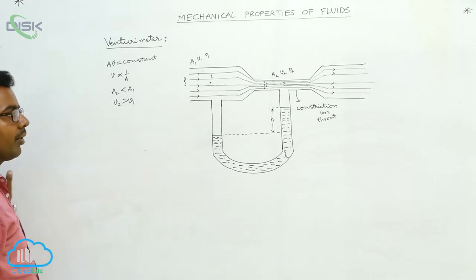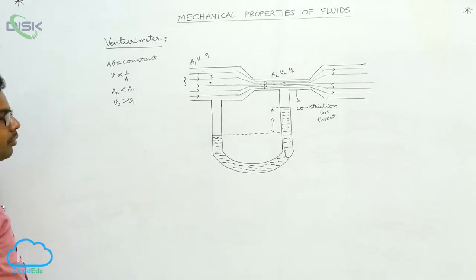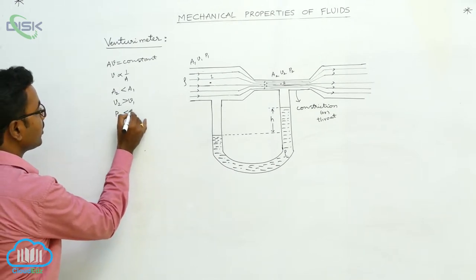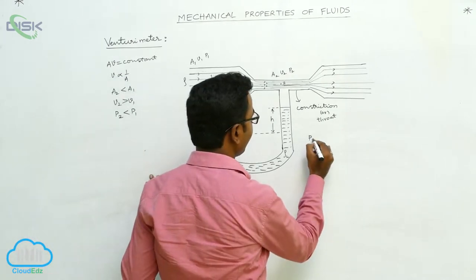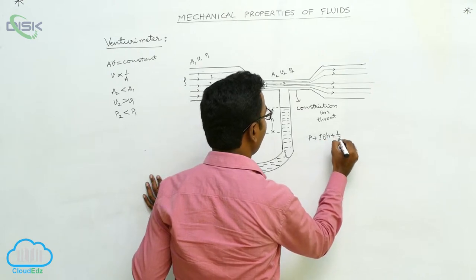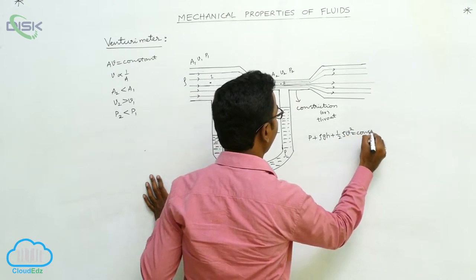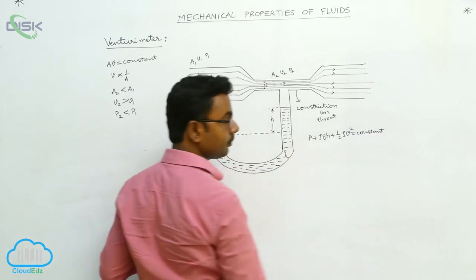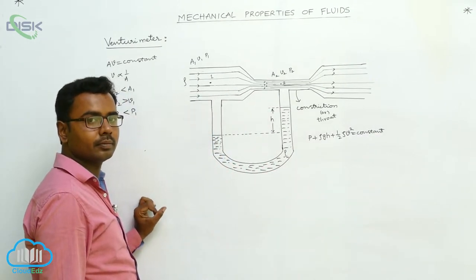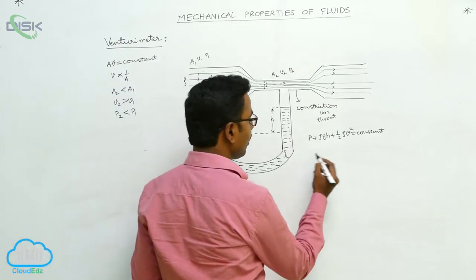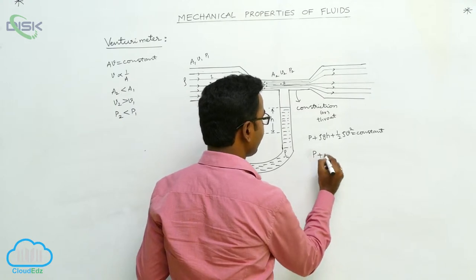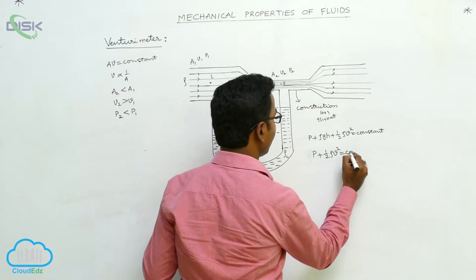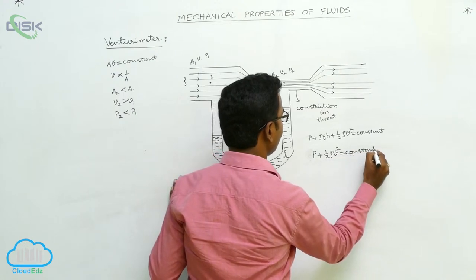Since V2 is greater than V1, according to Bernoulli's theorem for horizontal flow, P2 is less than P1. Bernoulli's theorem states that P plus rho*g*h plus one-half rho*V squared equals constant. For horizontal flow, this simplifies to P plus one-half rho*V squared equals constant.